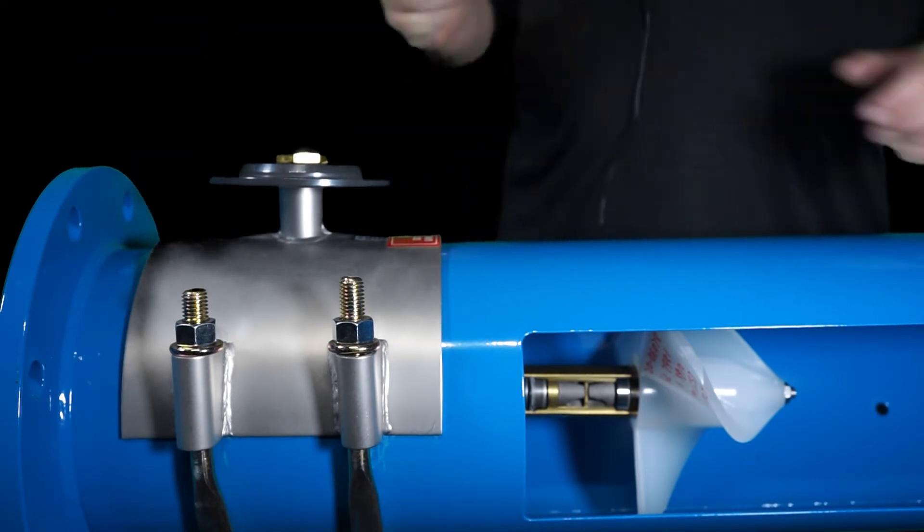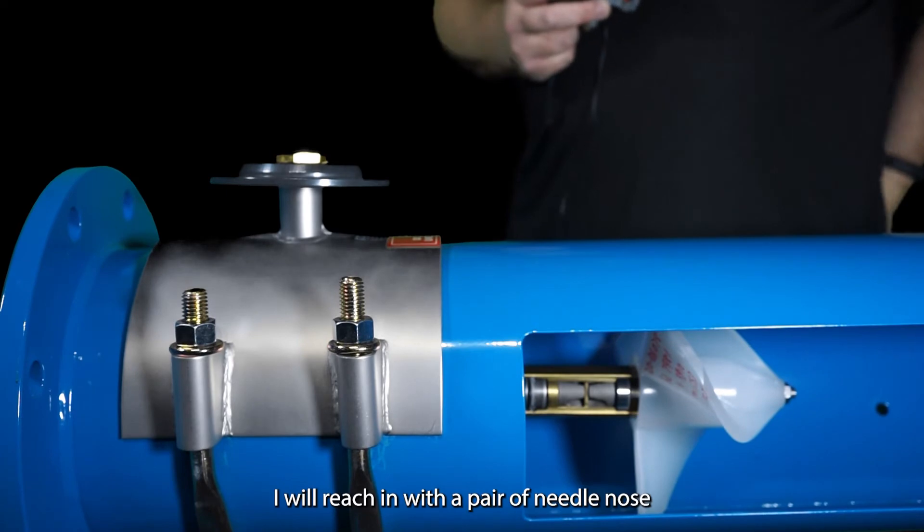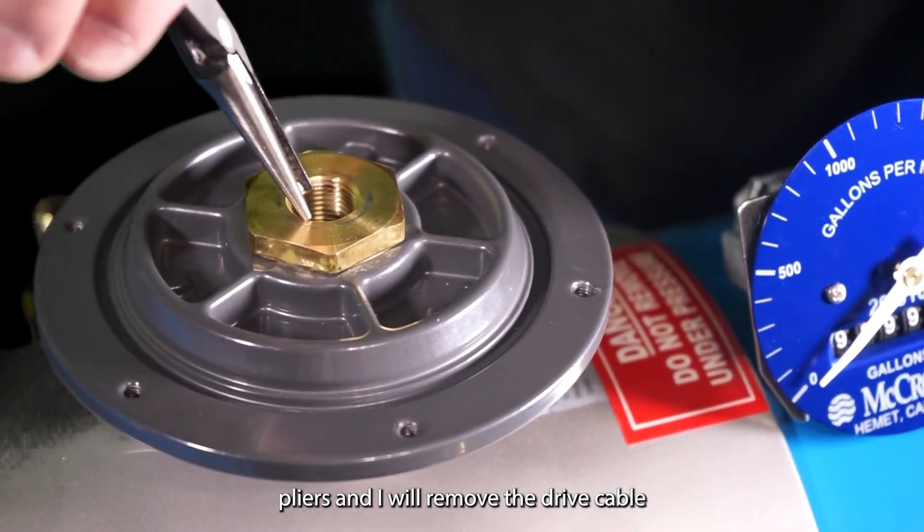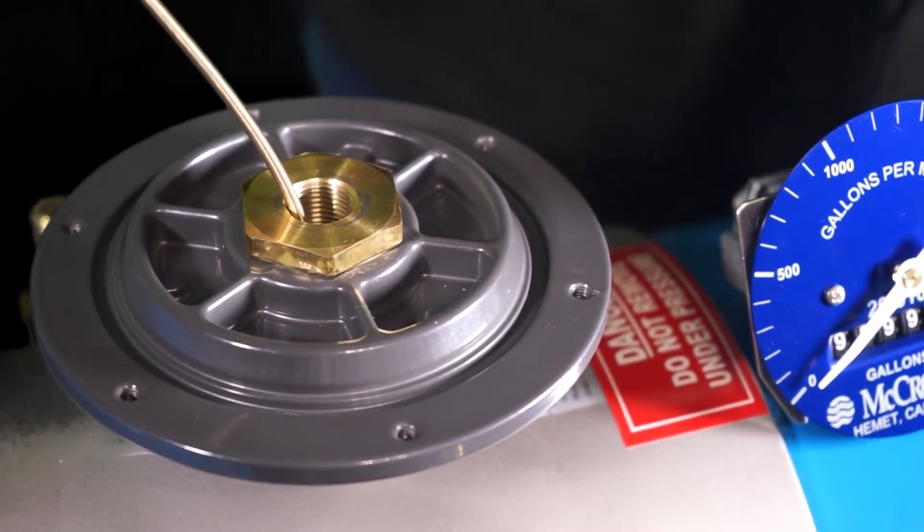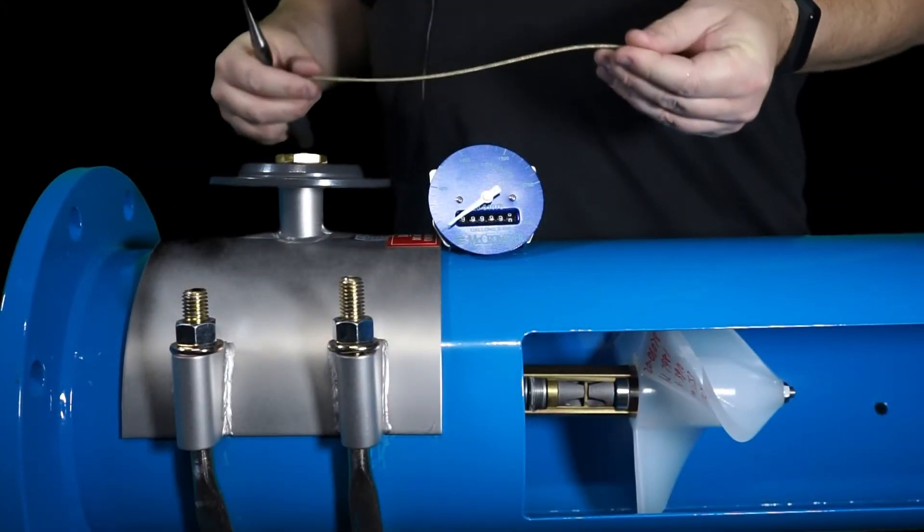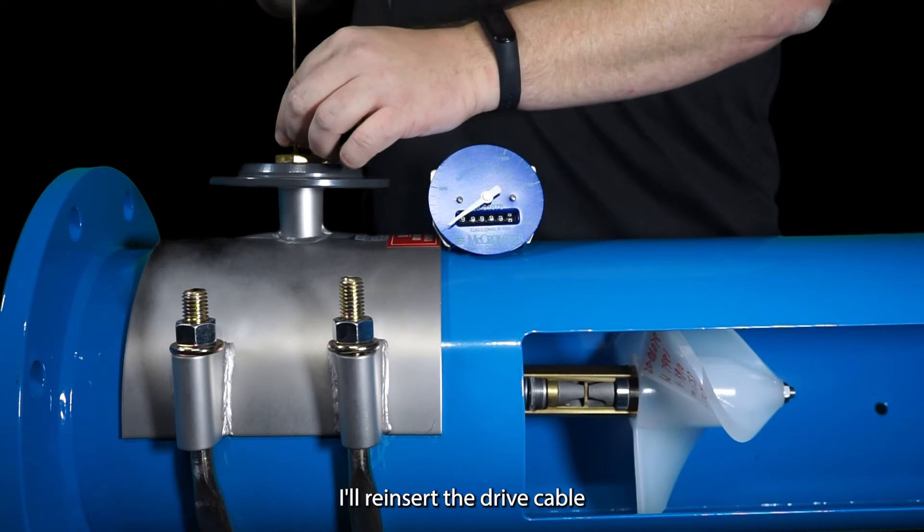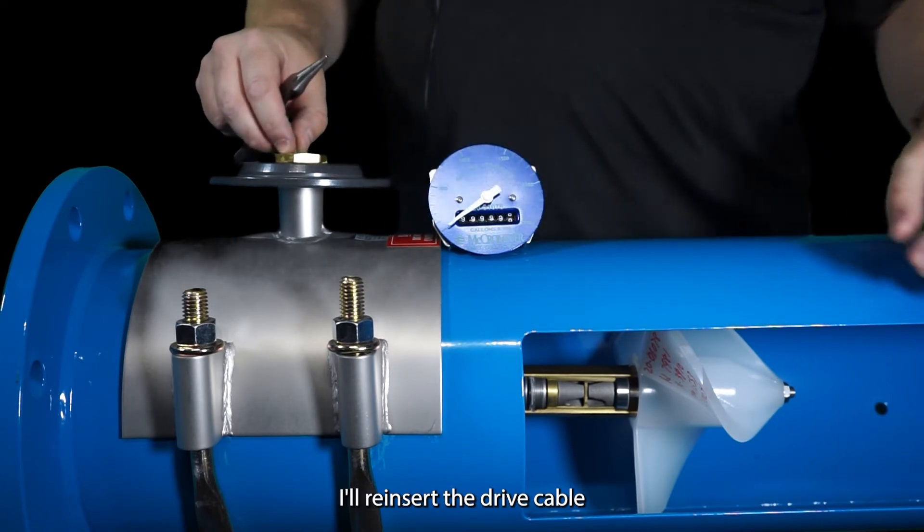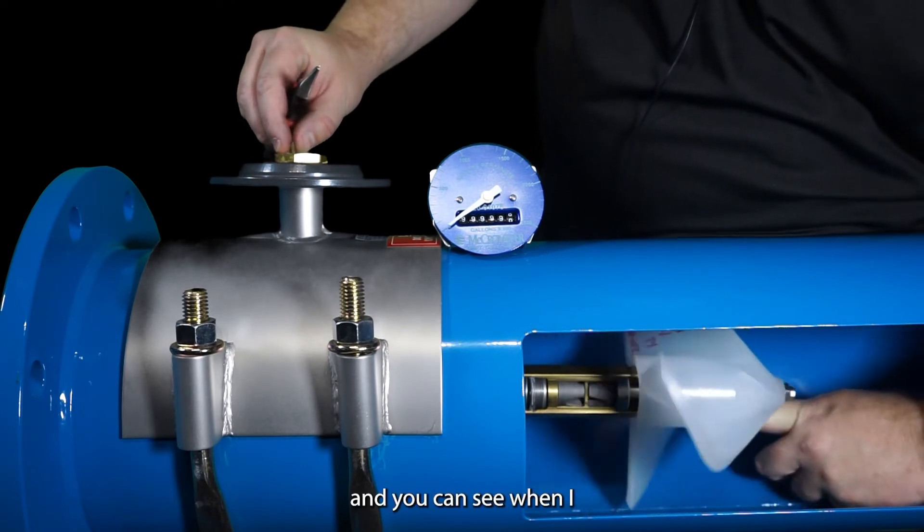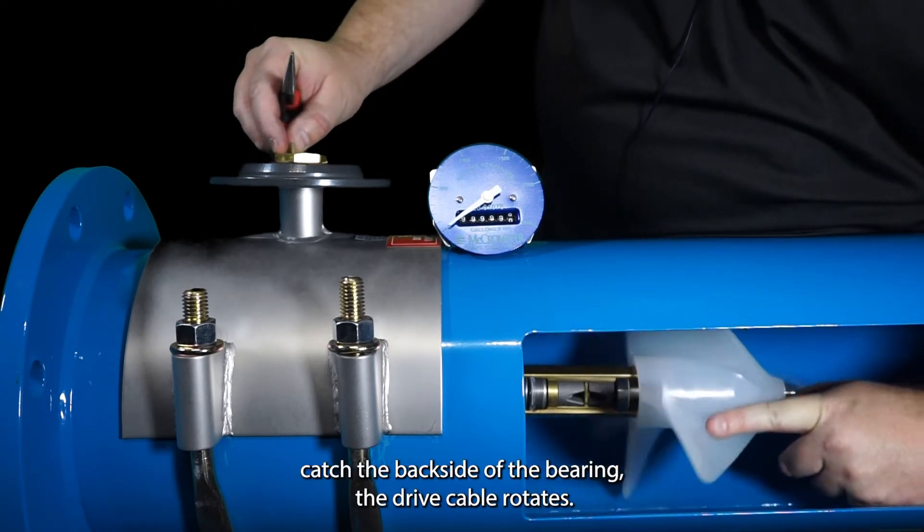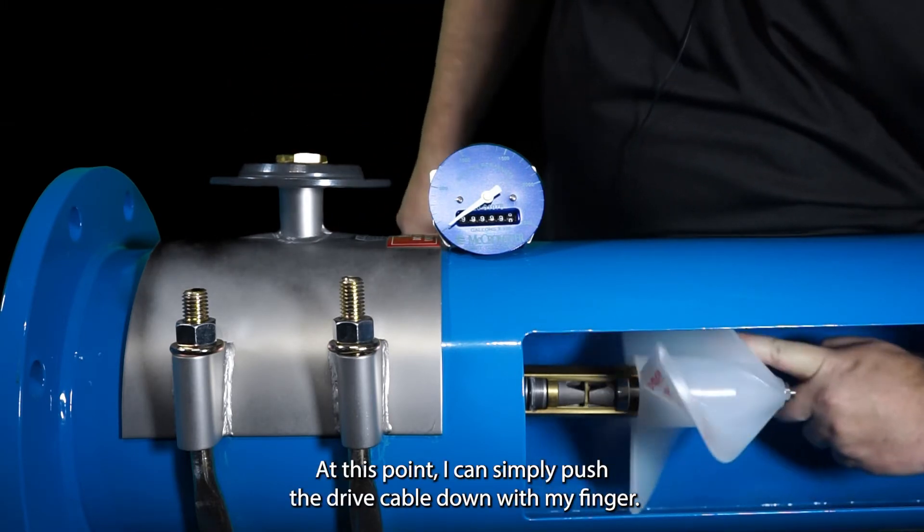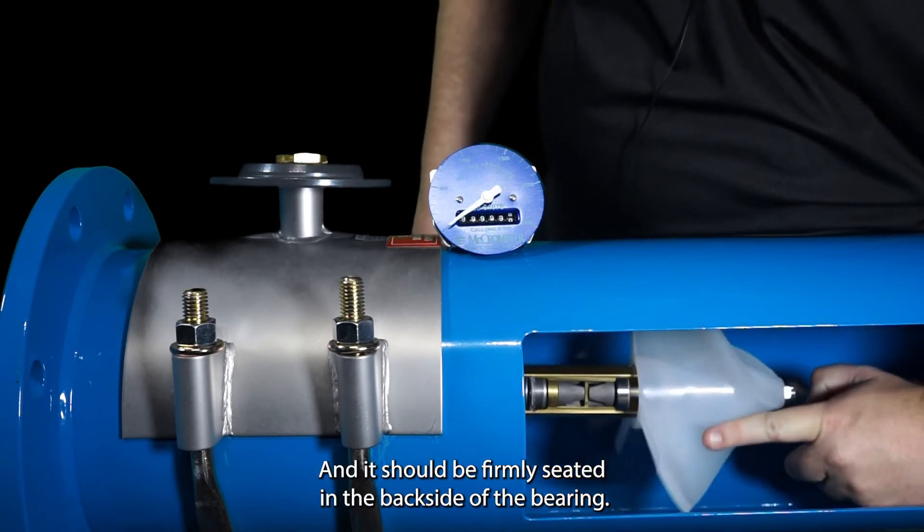So to check that I will reach in with a pair of needle nose pliers and I'll remove the drive cable and quickly inspect it. If everything looks good I'll reinsert the drive cable until it catches and you can see when I catch the back side of the bearing the drive cable rotates. At this point I can simply push the drive cable down with my finger and it should be firmly seated in the back side of the bearing.